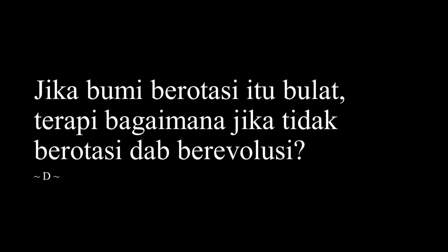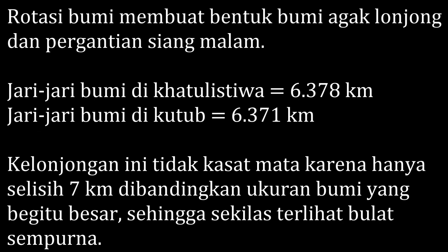Pertanyaan dari D. Di sini pertanyaan seperti ada tipe. Di sini akan mencoba memahami maksud pertanyaan: jika bumi berotasi itu bulat, tetapi bagaimana jika tidak berotasi dan berevolusi? Dikarenakan rotasi bumi, maka bentuk bumi yang seharusnya bulat sempurna menjadi agak kurang sempurna, agak sedikit lonjong. Tapi lonjongnya beda tipis banget. Jari-jari bumi di Khatulistiwa itu sekitar 6.378 km, sedangkan jari-jari bumi di Kutub itu 6.371 km. Jadi dari ukuran bumi yang sebegitu besarnya, ternyata cuma selisih 7 km saja. Sehingga kelihatannya seperti sempurna.